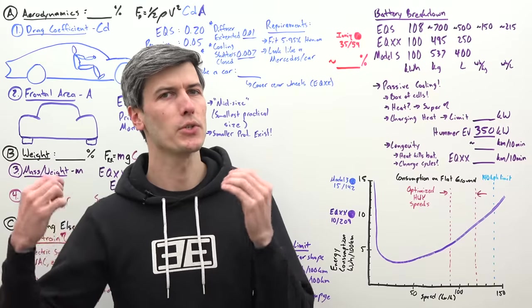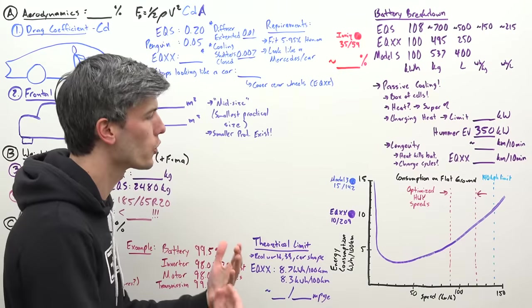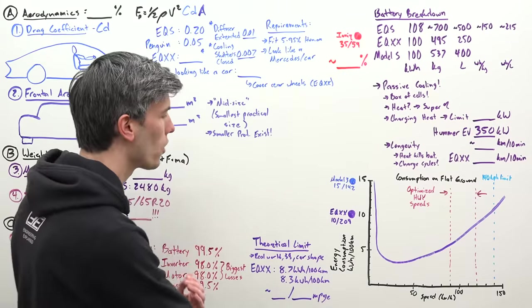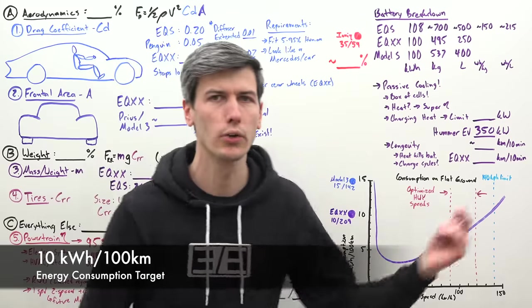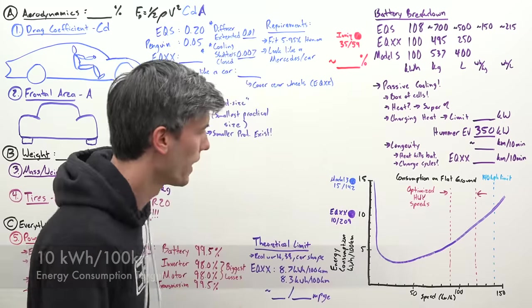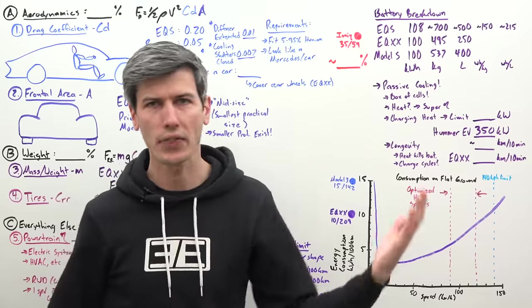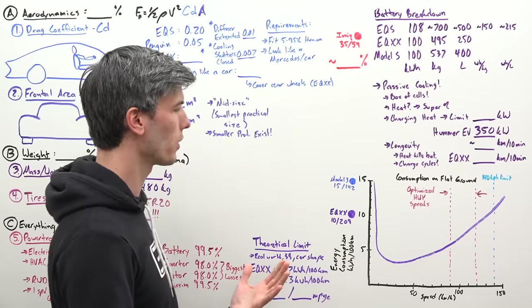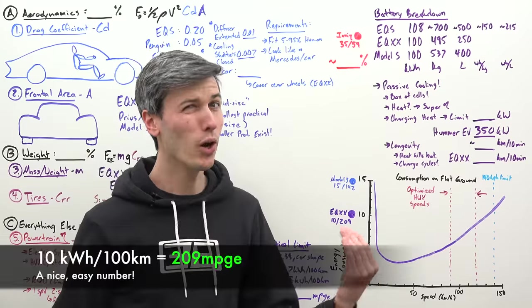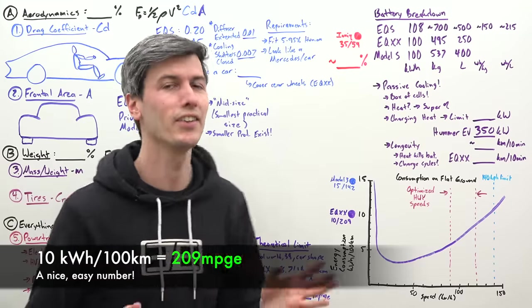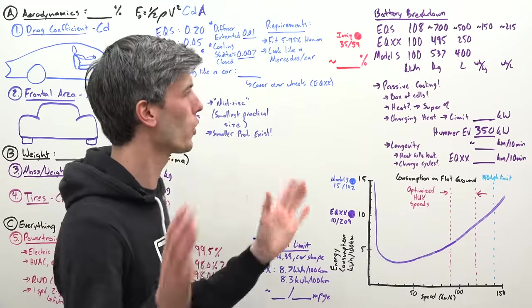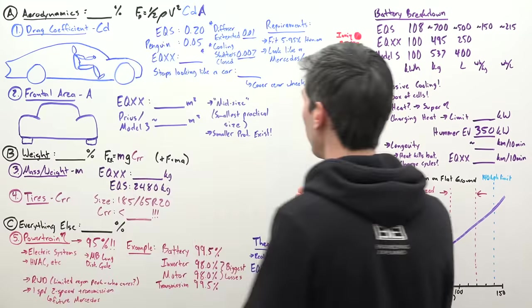If we translate Mercedes' goal into an energy consumption number, they're targeting 10 kilowatt hours per 100 kilometers driven. If you're from the U.S., that's about 209 miles per gallon equivalent. Miles per gallon is a terrible unit so we're going to try to avoid using it in this video.